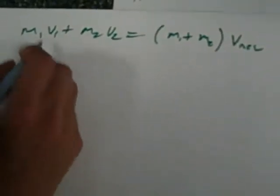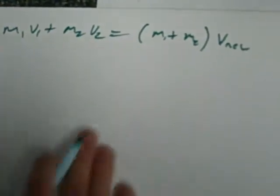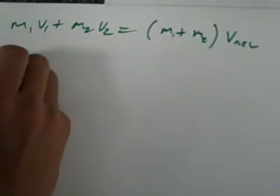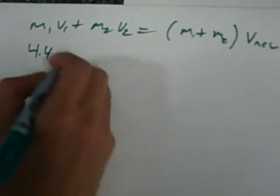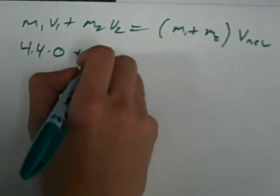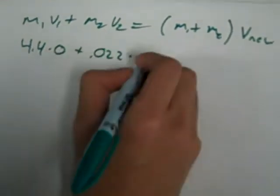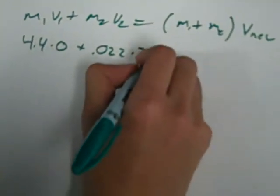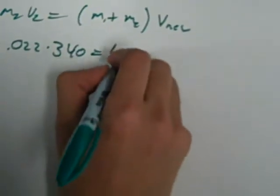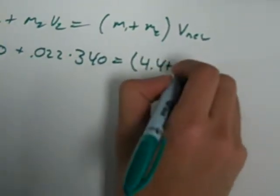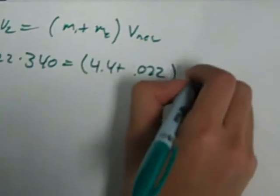Plugging these in, I'll have m₁ and v₁ for the wood, and m₂ and v₂ for the bullet. So, mass of the wood was 4.4 times the velocity, which is 0, plus the mass of the bullet, 0.022 times the velocity of the bullet, which is 340 meters per second, this equals 4.4 plus 0.022 times the new velocity.